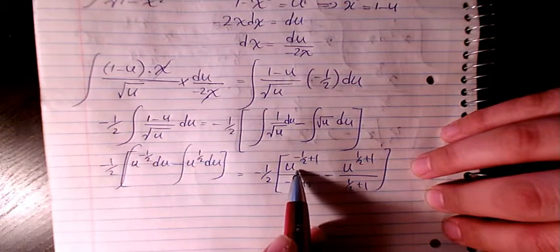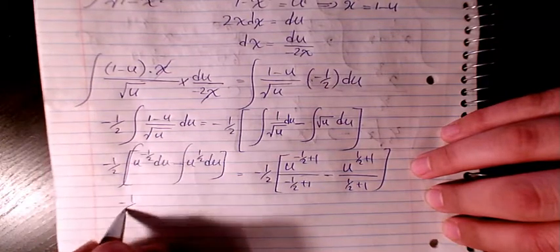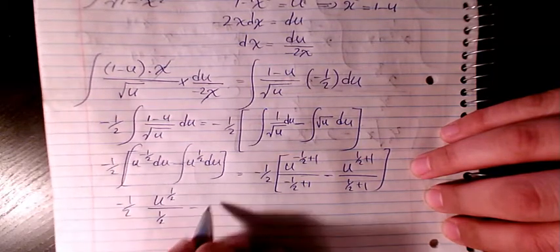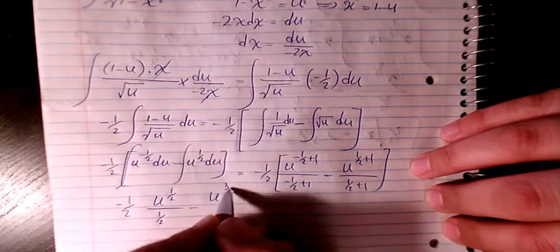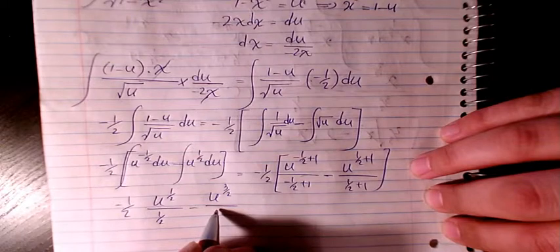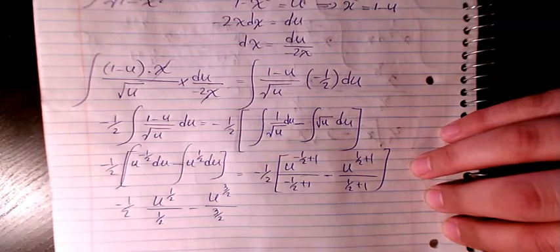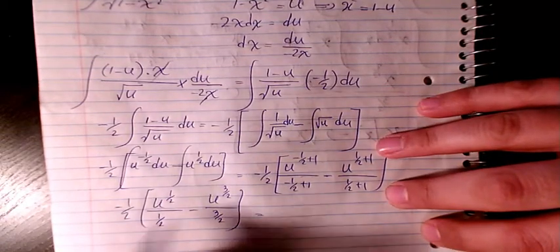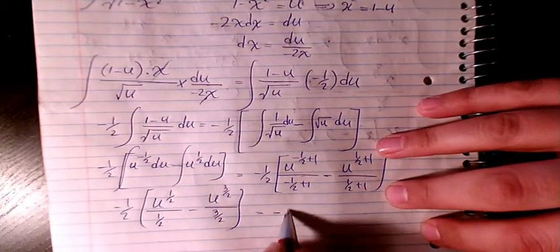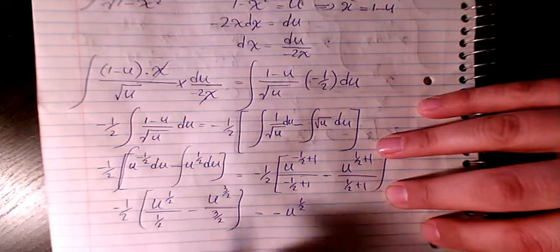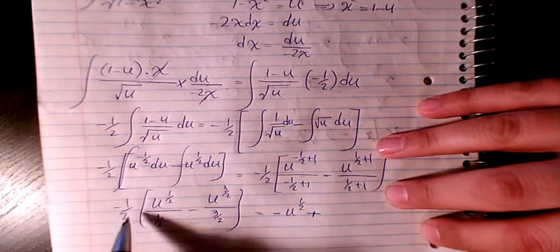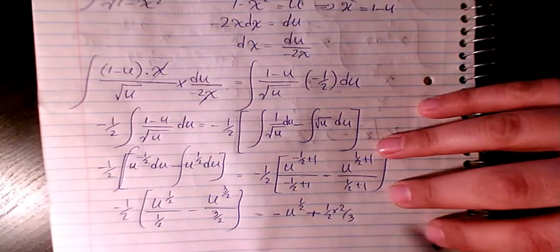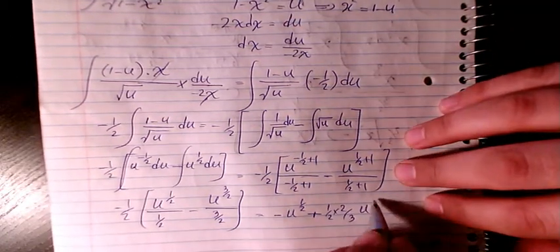These are after integration. So after integration we have negative 1 over 2 times u to the power of 1 over 2, divided by 1 over 2, minus u to the power of 3 over 2, divided by 3 over 2. These two cancel out, giving us negative u to the power of 1 over 2, and this one will be positive 1 over 2 times 2 over 3, u to the power of 3 over 2.